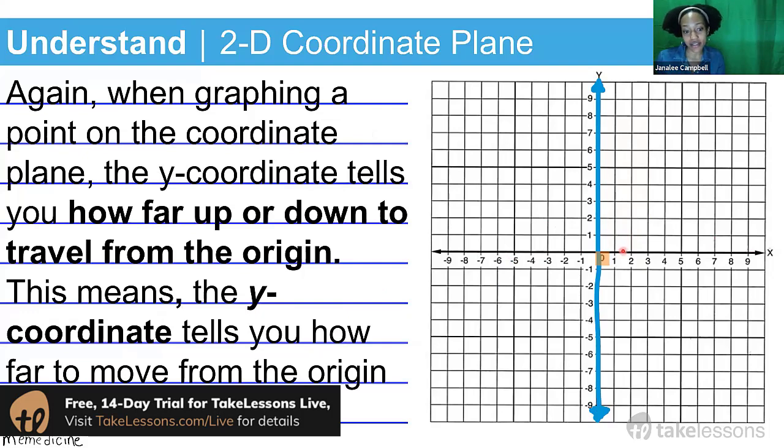Sometimes people get confused with this. If a y-coordinate value is telling you how far up or down to travel, you're moving away equidistantly from the x-axis, so you're actually moving away parallel to the x-axis.